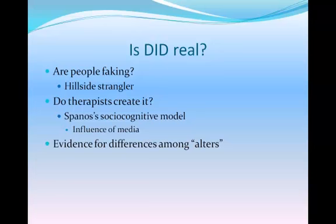Counter to that, there is some evidence for identifiable differences among alters — some people with DID show differences in physiological measures including EEGs when in different identity states, which is something hard to fake. But we don't know enough about the brain yet to be confident these reflect distinct personality states — the different physiological measures could also just indicate different ability to concentrate when in different states. The physiological debate is somewhat ambiguous, but the debate continues.